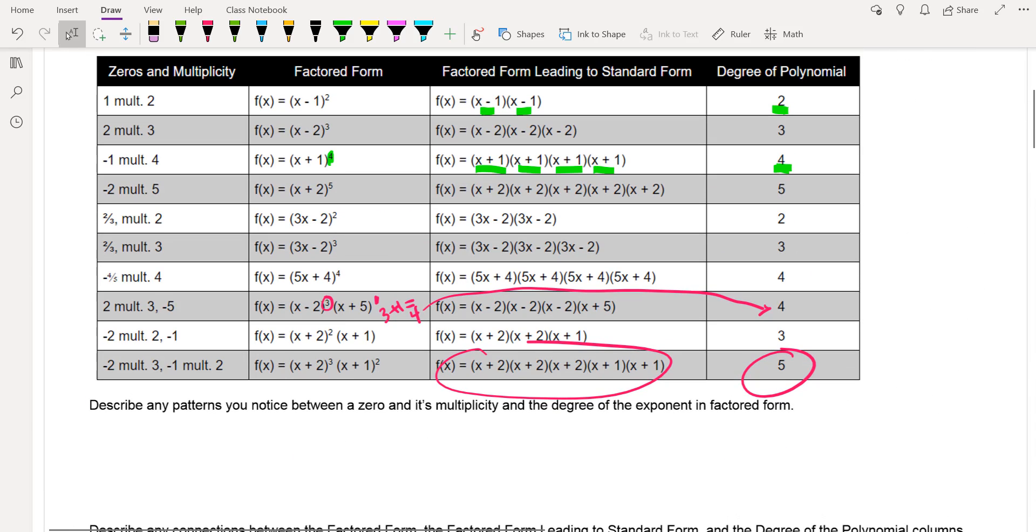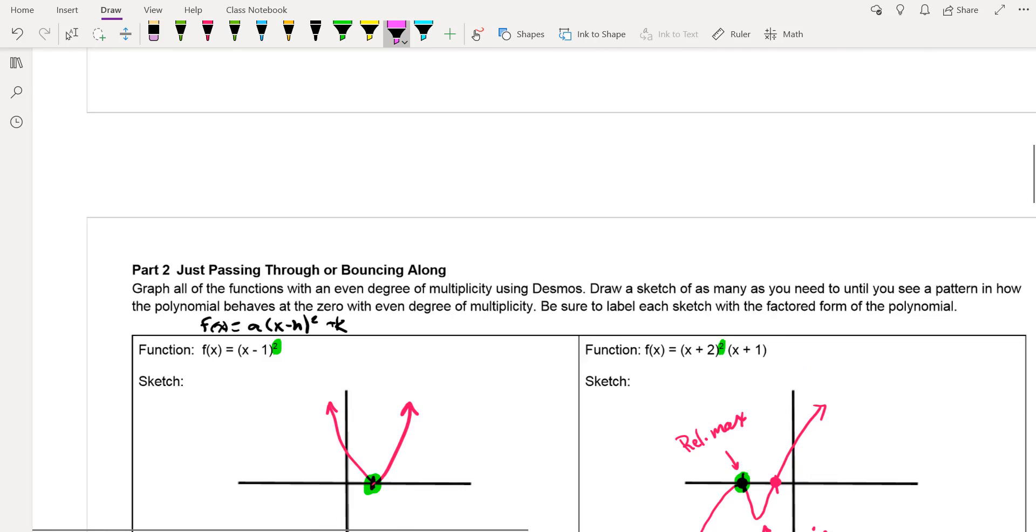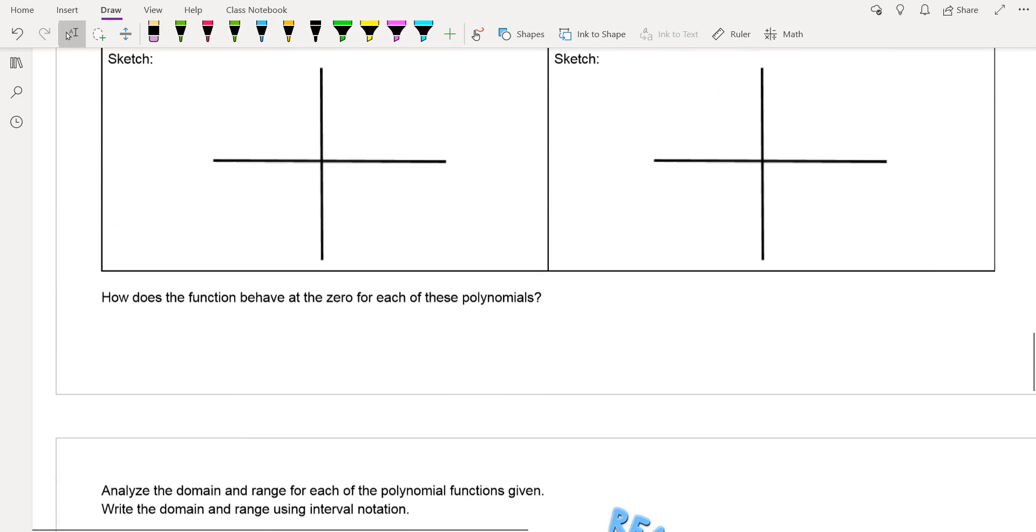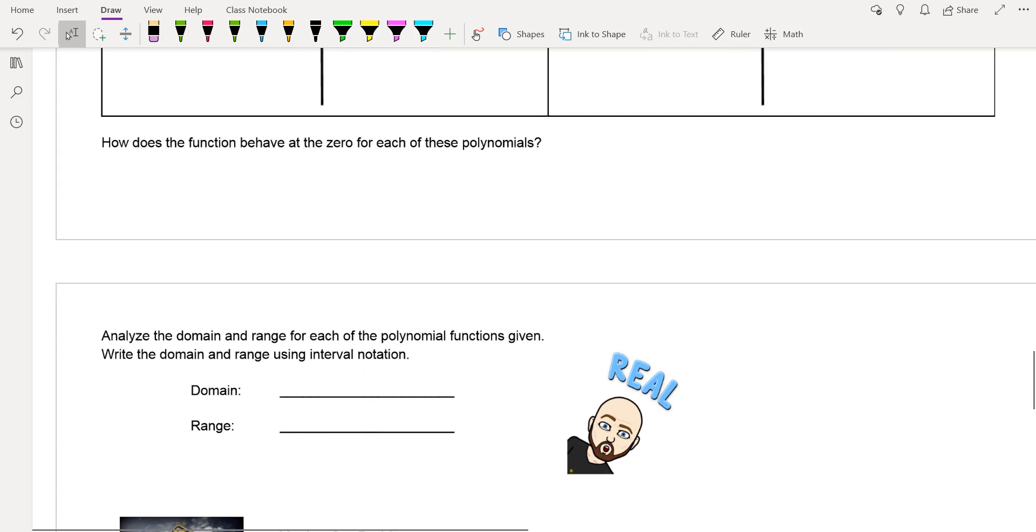pick two other examples from the table. So where's the table? So pick two other examples where you notice that there is an odd degree. So maybe one like this, that one's got an odd degree in there because you have a multiplicity of three. You've got this one right here has a multiplicity of three. So pick one of those other ones or both of them and take a look at that and see what it looks like in Desmos and then answer that question about how does the function behave there?